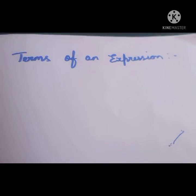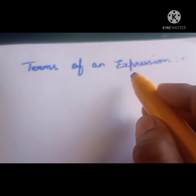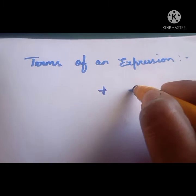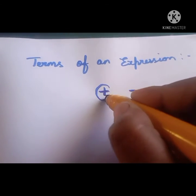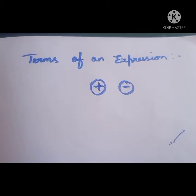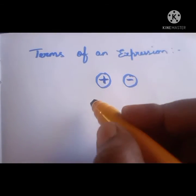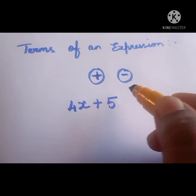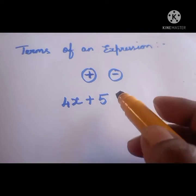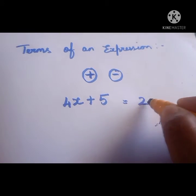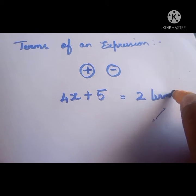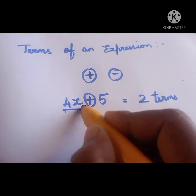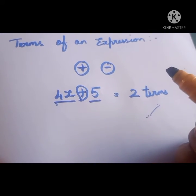Now let us see terms of an expression. Terms are split by addition and subtraction. For example, in 4x plus 5, how many terms are there? We can say 2 terms. Here there is only 1 plus sign, so 4x is 1 term and 5 is 1 term, separated by the plus sign.